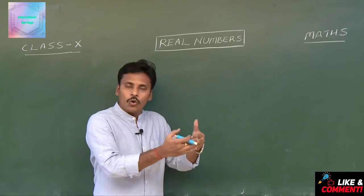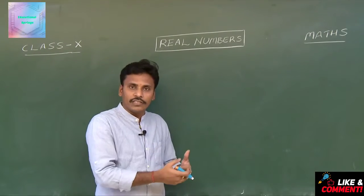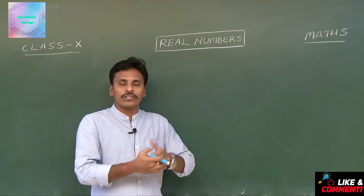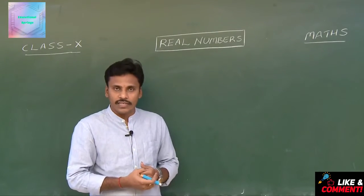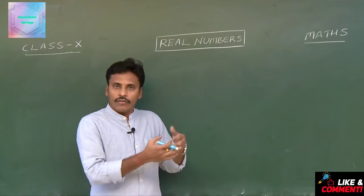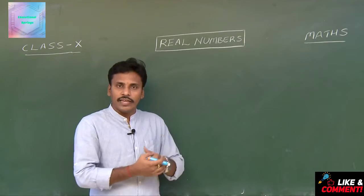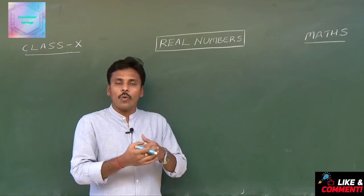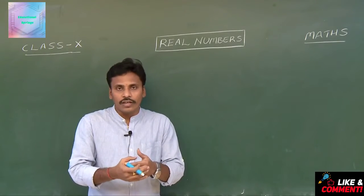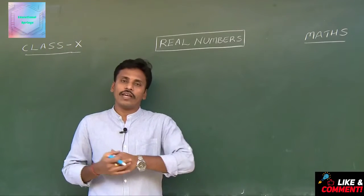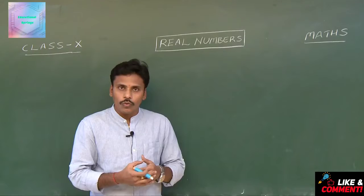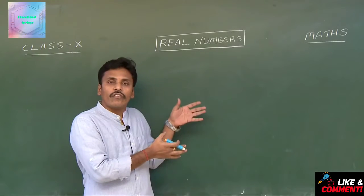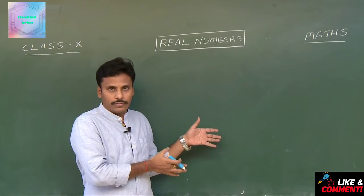Naturals, whole numbers, and integers were covered in your sixth and seventh classes. Rationals in eighth class, whereas irrationals in your ninth class. And now we are at real numbers.